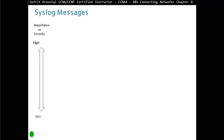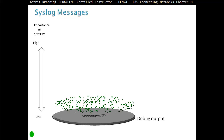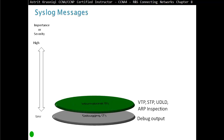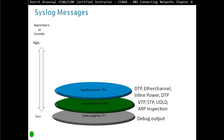Importance or severity goes from high to low. Starting from the lowest severity: level 7 is debugging output. Level 6 is informational — for example, VTP messages, VLAN trunking protocol, spanning tree protocol, unidirectional link detection, ARP inspection. Level 5 is notification — for example, DTP, EtherChannel if there's a problem with it, inline power.